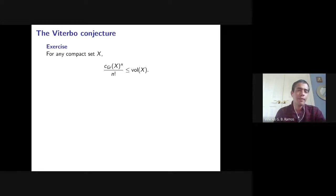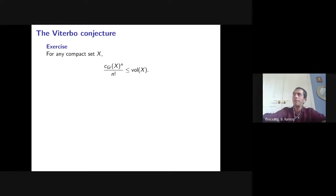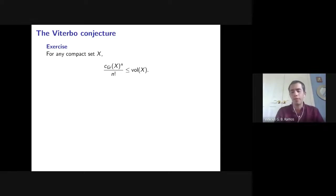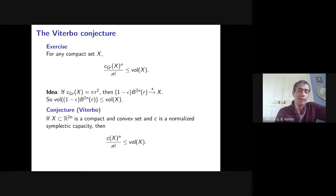An important open problem is the Viterbo conjecture. It's an exercise to show c_{GR}(X)ⁿ / n! ≤ vol(X) — the volume of the largest embedded ball is bounded by the volume of X. Viterbo conjectured this holds for every normalized symplectic capacity, with equality if and only if X is symplectomorphic to a ball. This conjecture is from the 1990s and remains open.